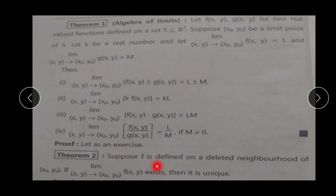Next theorem: Suppose f is defined on a deleted neighborhood of (x₀, y₀). Meaning जहाँ पर हमारा function define है, deleted neighborhood में — यानी center का point x₀, y₀ हमारे set में belong नहीं करेगा. If the limit of f(x,y) as (x,y) → (x₀, y₀) exists, then it is unique. अगर किसी भी function की limit exist होती है, तो वो unique होती है — मतलब single एक limit exist होती है. Important note: if limit of a function exists, then it is unique.